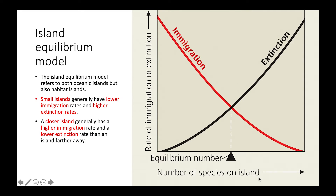A closer island is generally going to have higher immigration and lower extinction than an island that is farther away. We're going to have higher immigration because it's closer, so it's easier for organisms to get to. We're going to have lower extinction because if there's competition on that island, it won't be a far journey or particularly challenging for organisms to go back to an area with more abundant resources.